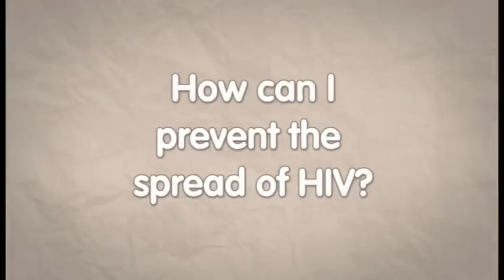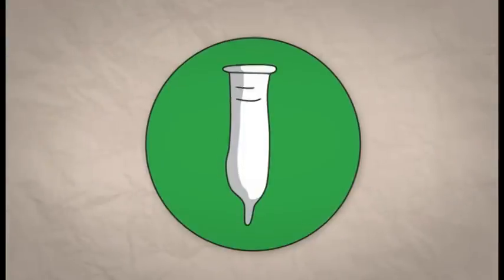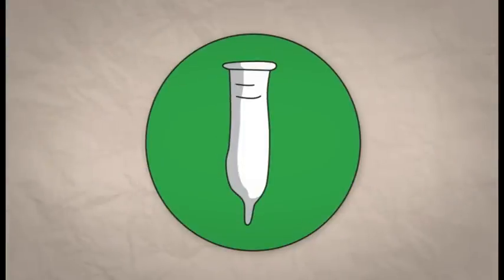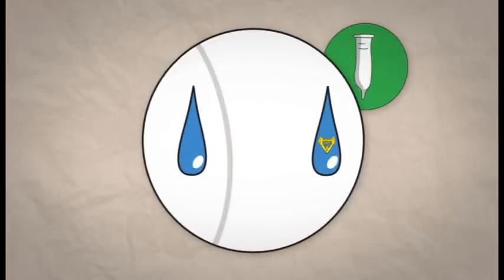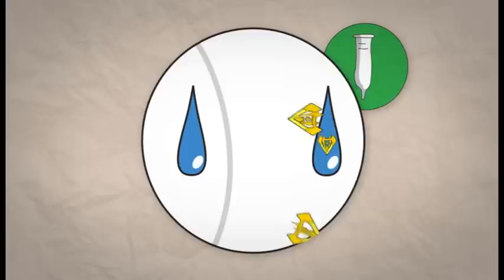How can I prevent the spread of HIV? Use a condom every time you have sex. A condom works by stopping the exchange of sex fluids by forming a protective barrier.